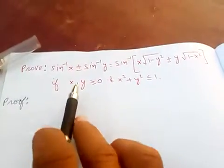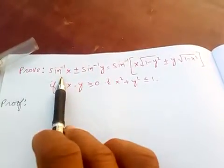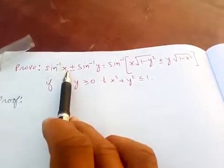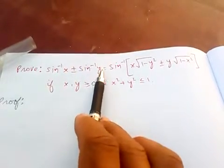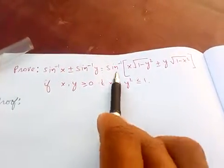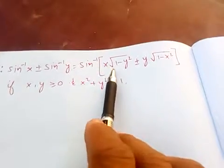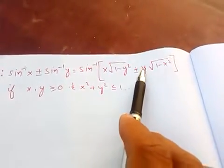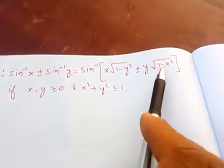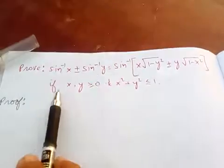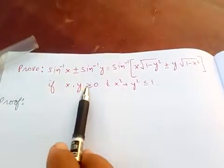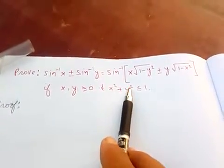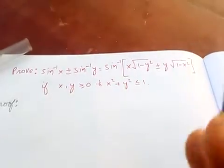Hi friends, today I'm going to prove a trigonometric identity: sine inverse of x plus or minus sine inverse of y is equal to sine inverse of x times root over 1 minus y squared, plus or minus y times root over 1 minus x squared, where x and y should be greater than or equal to 0, and x squared plus y squared should be less than or equal to 1.